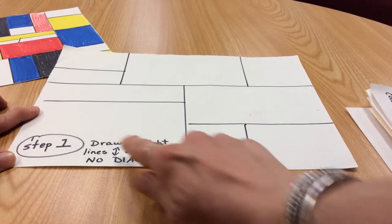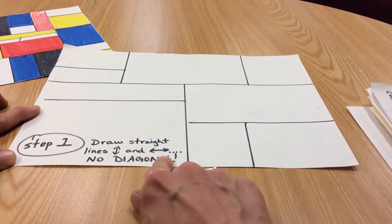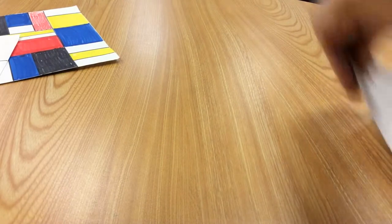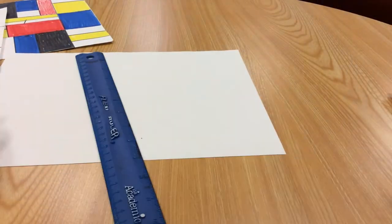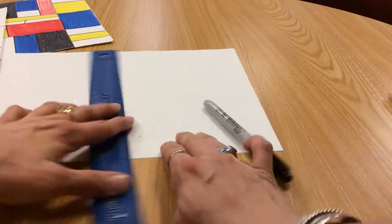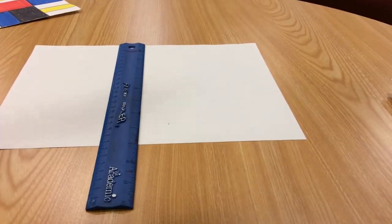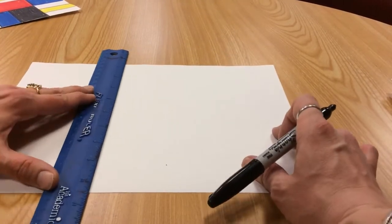Alright, so we are going to start off with step one: draw straight lines, vertical and horizontal, no diagonal lines. On a piece of paper, you are going to need a ruler and a black Sharpie. Using the black Sharpie, you will just have fun drawing vertical and horizontal lines.